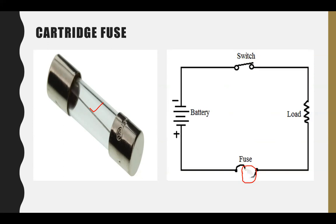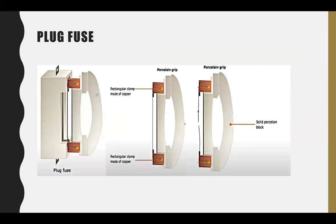Now let's discuss the plug fuse. In this picture you can see this kind of fuse is called the plug fuse, which has two parts: the casing or socket, and the grip made from porcelain. In the grip, at both ends, there are two rectangular shaped metallic plates made from copper, and here is the fuse wire.